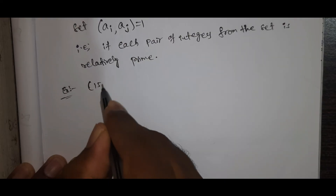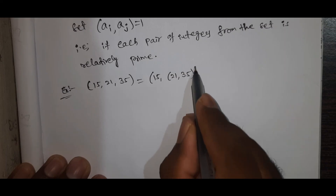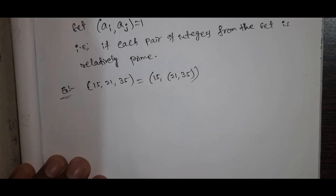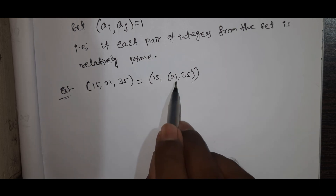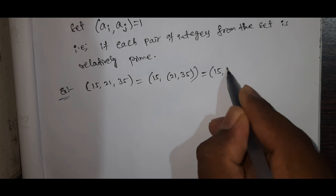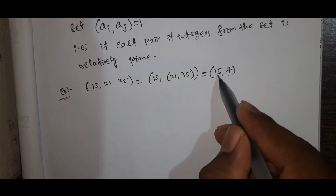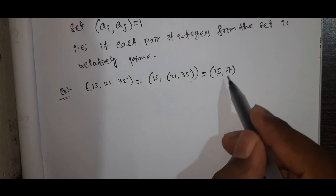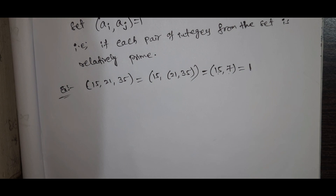Example: integers 15, 21, and 35. Now we can discuss whether 15, 21, 35 are mutually relatively prime. We are going to check GCD(15, 21, 35). The GCD includes checking 7 — 15 and 7 is mutually relative. We look at the 7 table values. We check if it is pairwise relatively prime. It is not pairwise relatively prime.